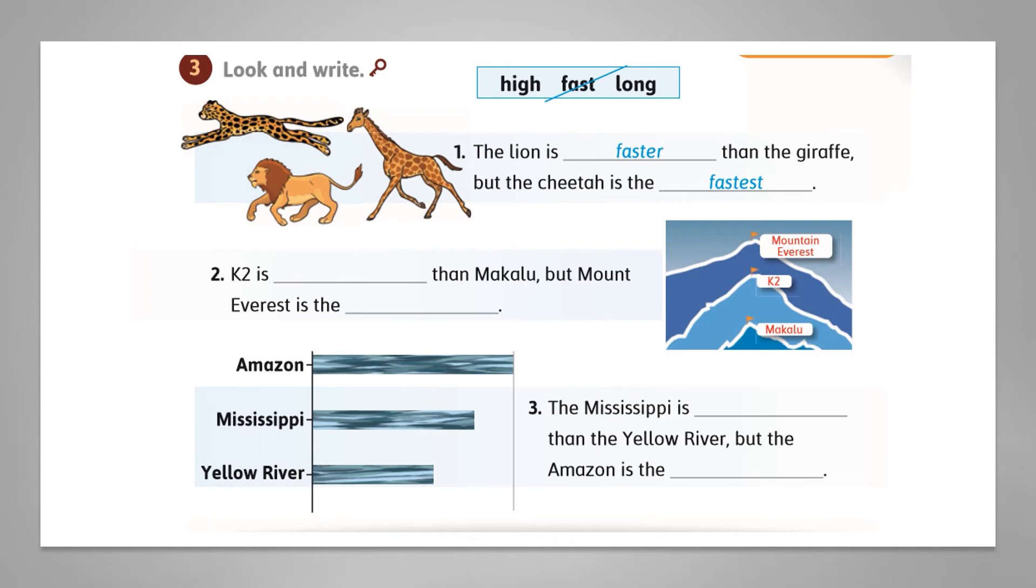We are going to look and write. We have three adjectives: high, fast, long. The lion is faster than the giraffe, but the cheetah is the fastest.